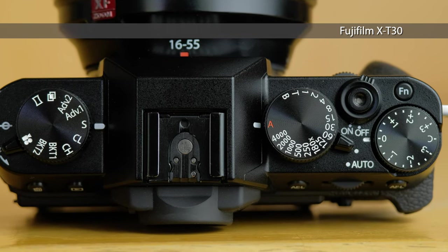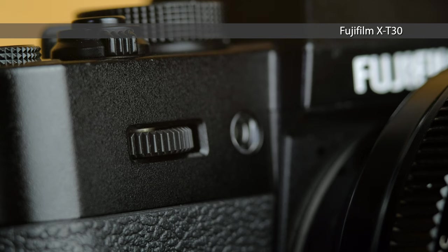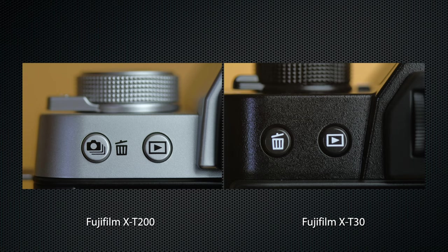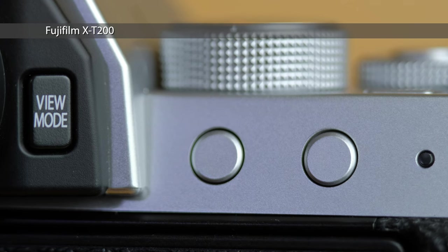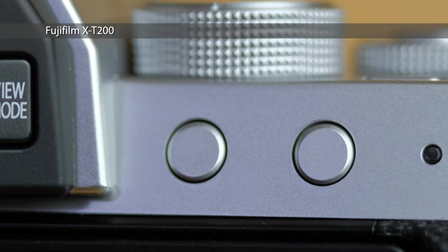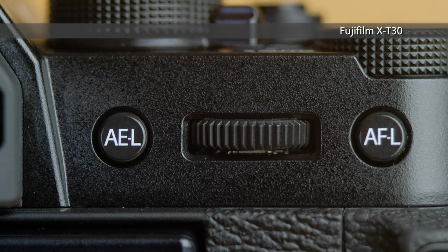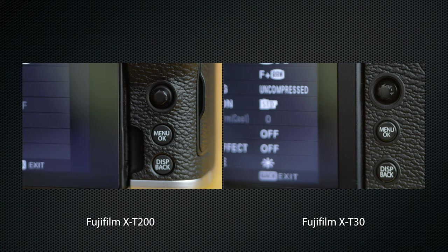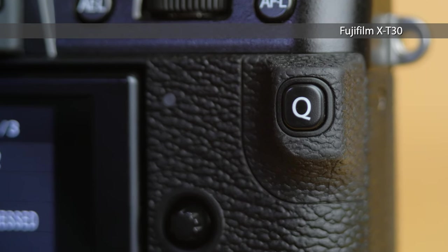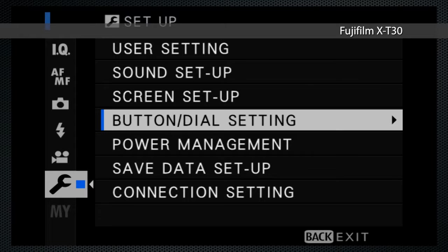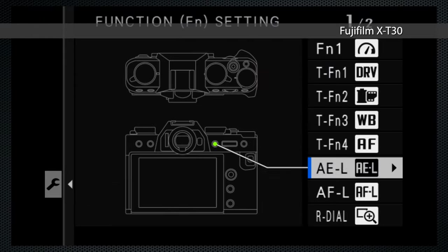The X-T30 also has a dial in front and on the back of the right side. On the back left, both have play and delete keys. On the back right, the X-T200 has two unlabeled custom keys — by default, one opens the touch menu and the other locks exposure. On the X-T30, they're labeled as exposure and focus lock, but they can also be customized. On the back, both have a navigation joystick, a menu key, and a display key. The X-T30 also has a Q key to open the quick menu. I found this to be very badly placed, almost constantly accidentally activating it; firmware updates have added a menu setting to disable and reallocate it.